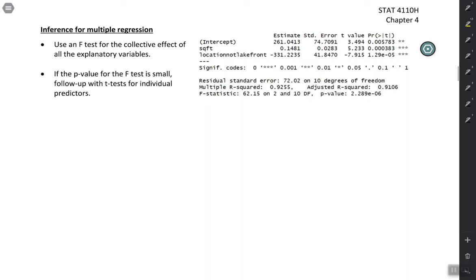We're going to do an F test and we're going to do a T test. So we'll start with the F test for the collective effect of all the explanatory variables. You've seen this before that an F test can test more than one parameter at a time. So we're going to be using the F test for testing the overall model.